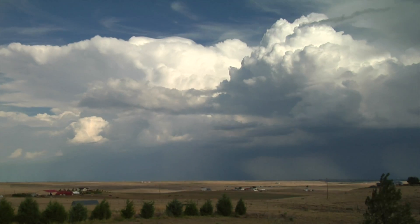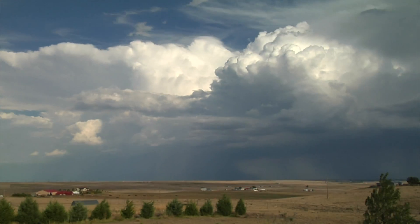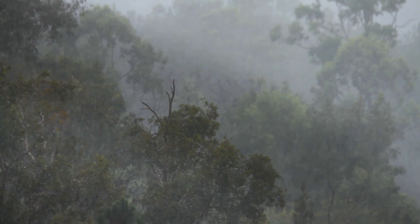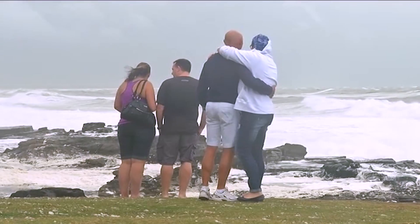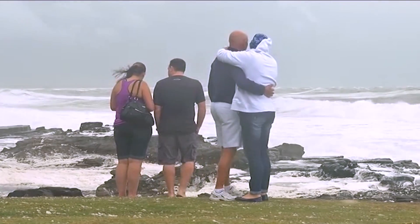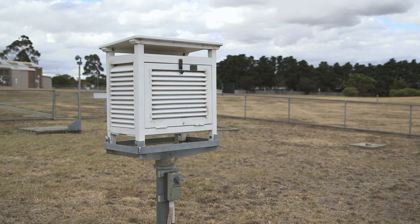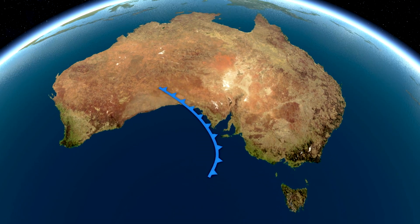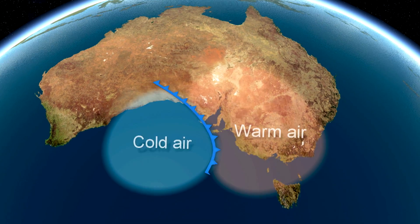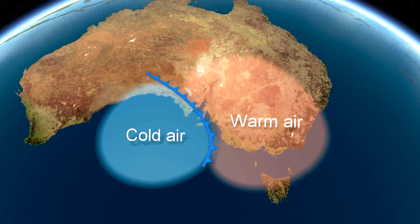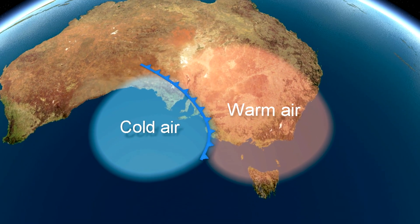A cold front is a common feature we see on weather maps, particularly through southern parts of Australia. It brings a change in the weather, particularly to cloud, rainfall, a sudden change in wind direction accompanied with gusty winds, and usually a sharp drop in temperature. It's a change in air mass from warmer conditions to cooler conditions.